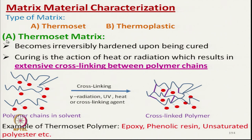Thermoset matrices are irreversibly hardened upon being cured. During curing, extensive cross-linking takes place, and due to this cross-linking they are not reversible. This cross-linking is achieved by heating, by different forms of radiation, or by using cross-linking agents. Examples of thermoset matrices include epoxy, phenolic resin, and unsaturated polyester.